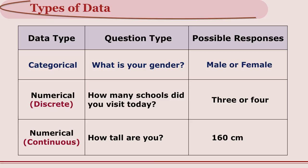Consider another question: if I ask how tall are you, you will say 160 centimetres or 170 centimetres. Though this is numerical, these are two different types of numerical data. When you answer 3 or 4 schools, that is discrete data, whereas the height of 160 centimetres is called continuous data.